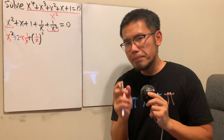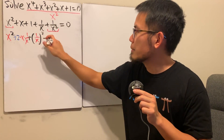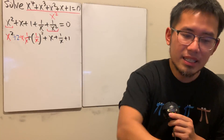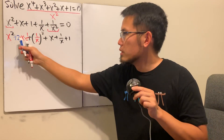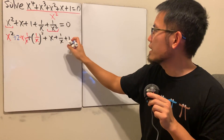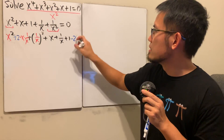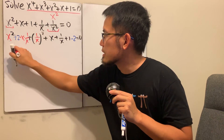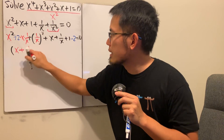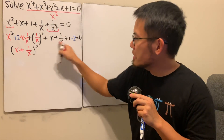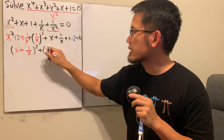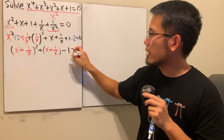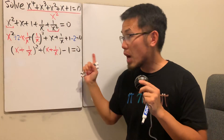Continuing: we have (x + 1/x)², then plus x plus 1/x, then plus 1. We added two, so those cancel, and we just subtract 2 at the end — giving us minus 1 overall. This right here becomes (x + 1/x)² plus (x + 1/x) minus 1 equals zero. This equation is now in quadratic form.